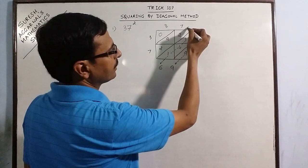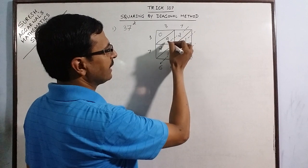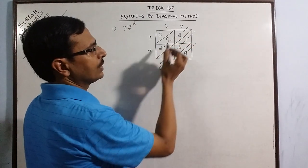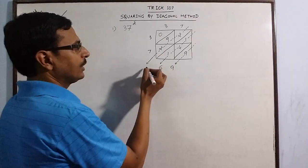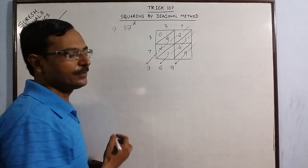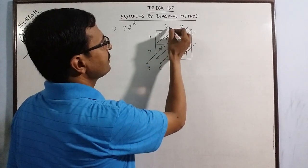The third one is this diagonal. 2 plus 9 is 11 plus 2 is 13. So you have the third number, 13. Now 13 you have to write 3 and carry forward 1 to the next number. Next number obviously here is 0.